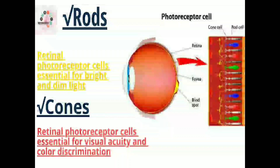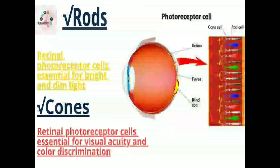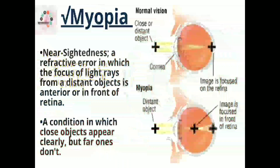Next we have rods and cones. These two are photoreceptor cells. Rods are essential for both bright light and dim light, while cones are essential for visual acuity and color discrimination.